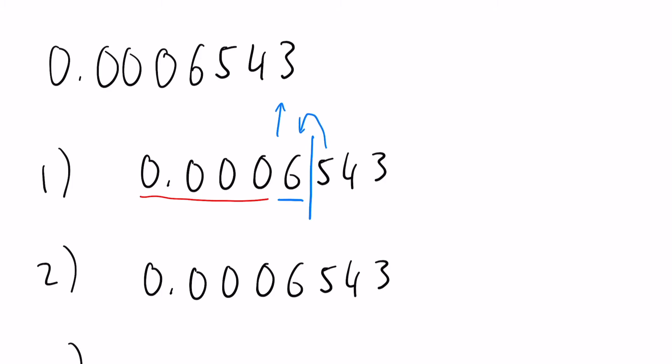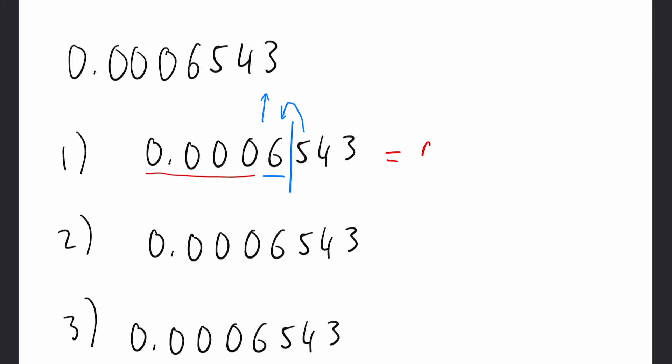We see it's a five, so that means the six will go up to a seven, making it equal to, and again here we need to keep the positional value of the numbers, 0.0007. And again we have that one significant number, we don't have any more than that.